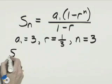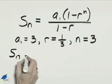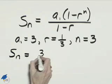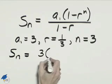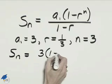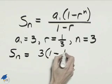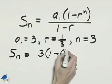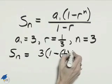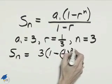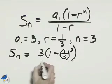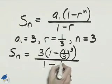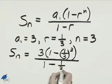We'll have S sub n equals A sub 1, which is 3, times the quantity 1 minus 1 third raised to the third power, and in the denominator is 1 minus 1 third.